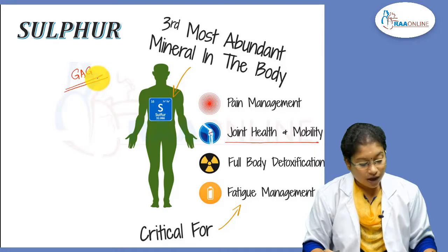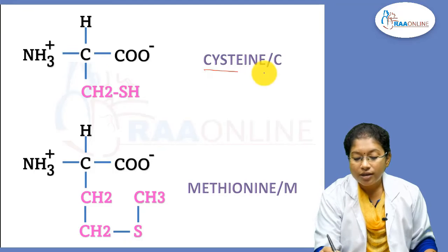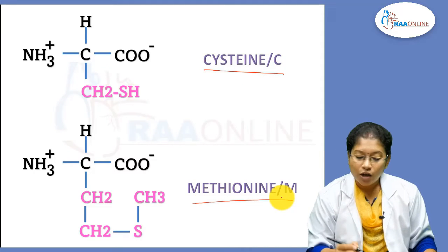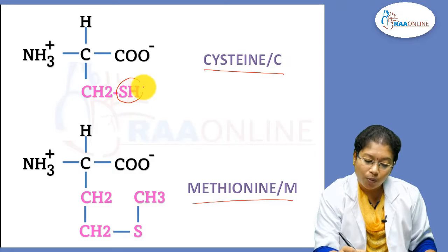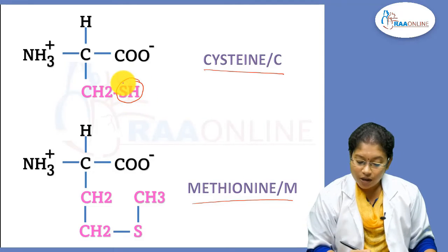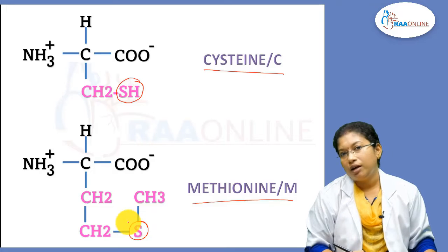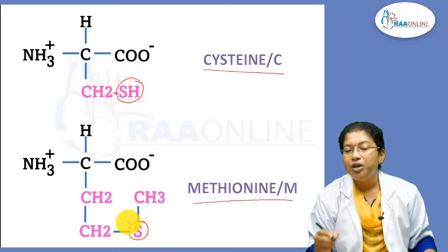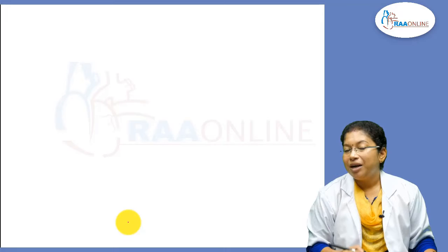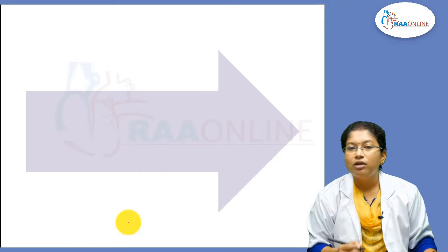The sulfur-containing amino acids are cysteine and methionine. You can see the sulfur compound here — an S-methyl-thioether linkage is present in methionine. The metabolism of methionine and cysteine will be seen in this order.